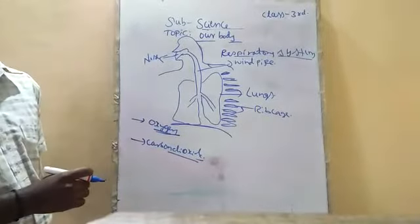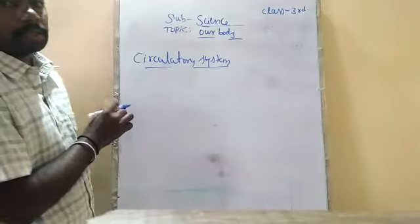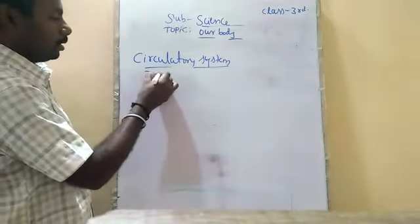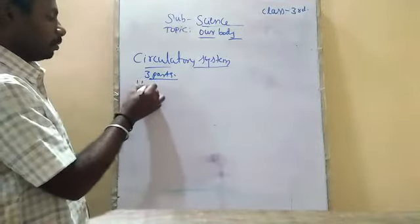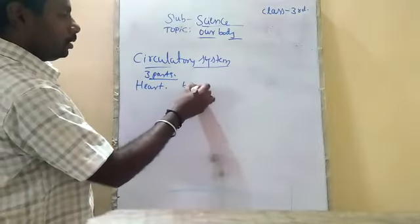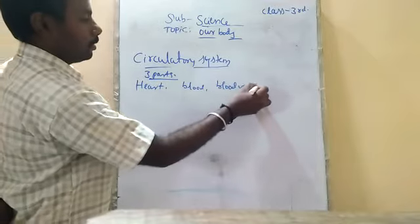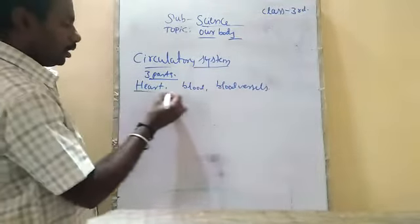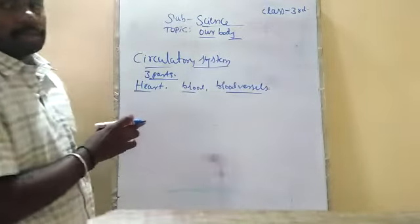Next, we will move to another system in our body — that is the circulatory system. This circulatory system consists of three main parts: the heart, the blood, and the blood vessels. These are the three parts of the circulatory system.